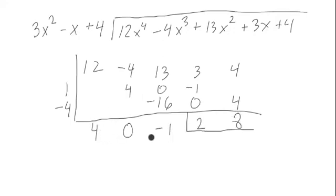This means that the quotient is 4x squared minus 1, and the remainder is 2x plus 8.